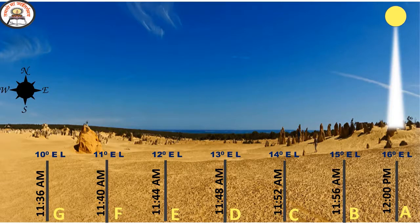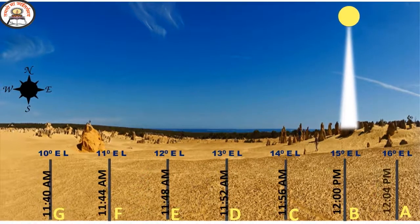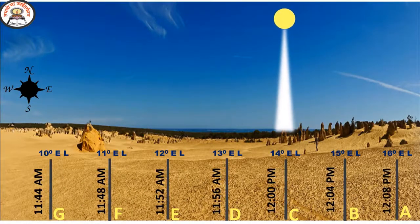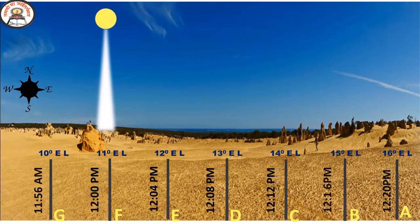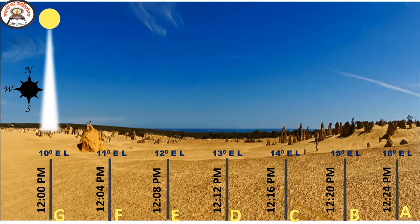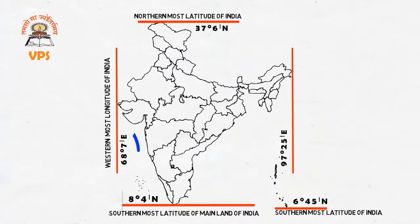As the sun moves from east to west, the local time in these places changes. Observe the change in time keenly. At any given point in time, there is a time gap of 24 minutes between A and G. The difference exists because local time varies from place to place. This can create confusion in big countries. Take our country for instance — it extends from 68 degrees 7 minutes east longitude to 97 degrees 25 minutes east longitude. The longitudinal extent of India is about 30 degrees, giving a difference of about 2 hours between the two extreme longitudes.